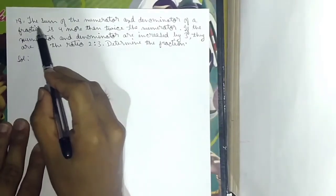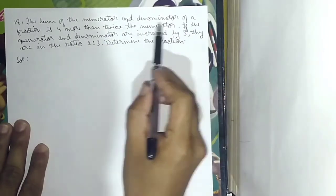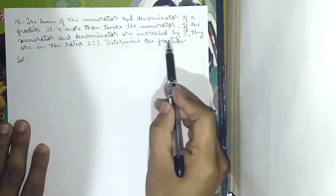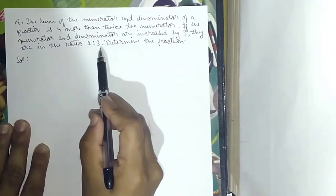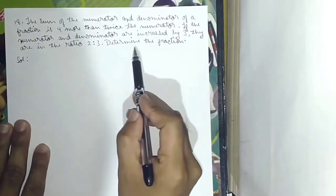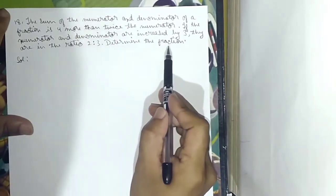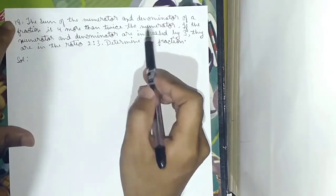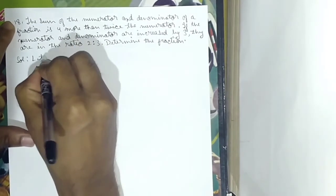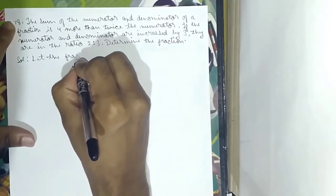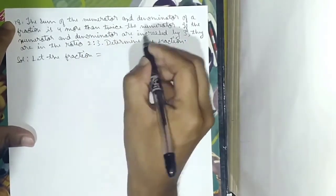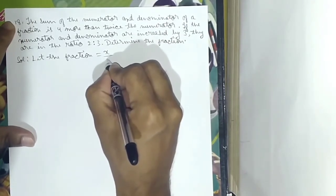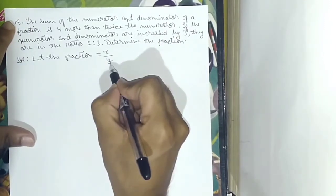Number 18: The sum of the numerator and denominator of a fraction is 4 more than twice the numerator. If the numerator and denominator are increased by 3, they are in the ratio 2 is to 3. Determine the fraction. Let the fraction be x by y, where x is the numerator and y is the denominator.